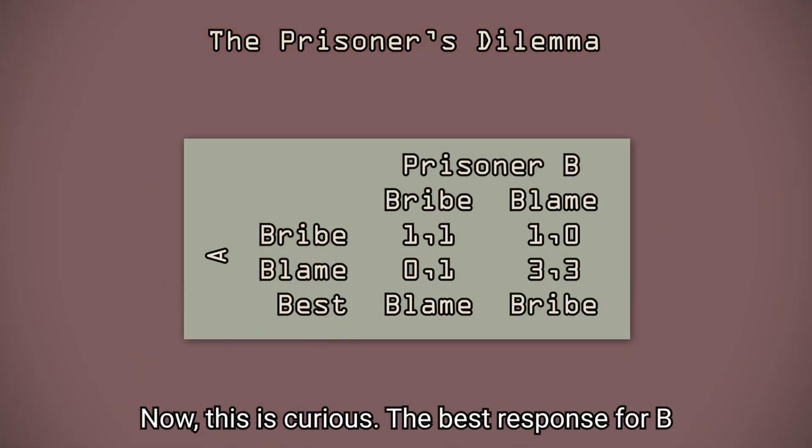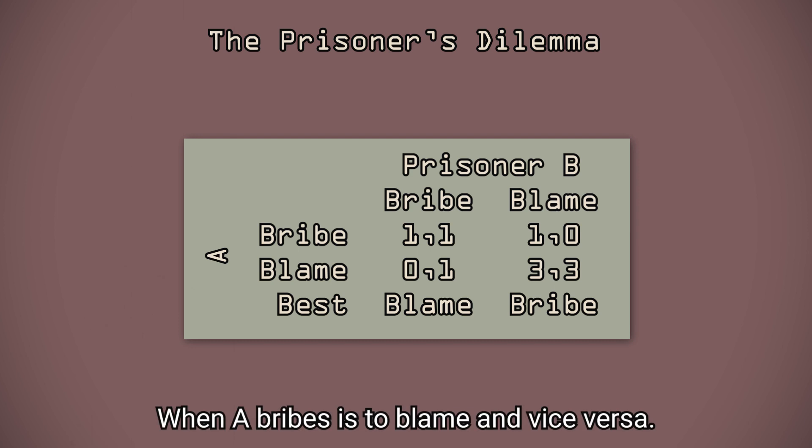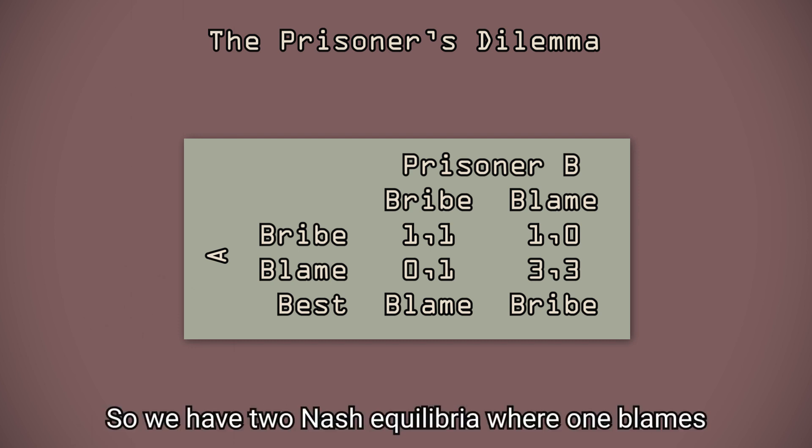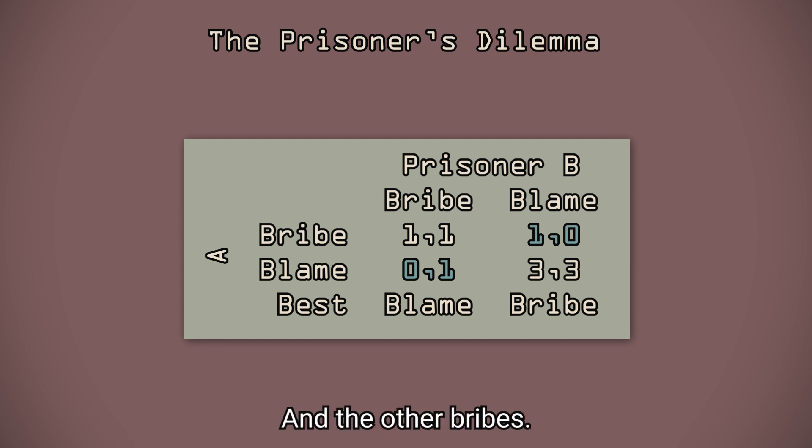Now, this is curious. The best response for B when A bribes is to blame, and vice versa. So we have two Nash Equilibria where one blames and the other bribes.